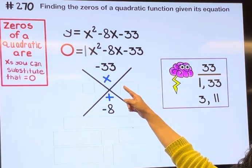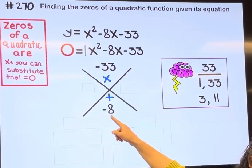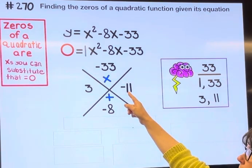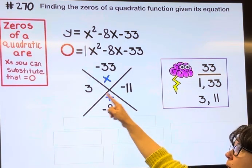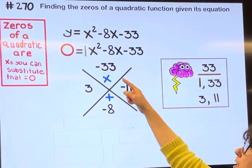So looking at my short list, if it multiplies to get negative 33, we need one positive and one negative. And if it's going to add up to negative 8, then we need more negatives than positives. So the pair 3 and 11 are going to get me to that 8, making the 11 negative, so when we add them we get negative 8.